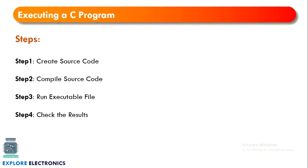So there should be some mechanism which converts this high level language — that is the source code. Source code is nothing but the code what we write, the program. There should be a mechanism which converts the source code into machine level code. This is known as compilation. What does a compiler do? It converts or compiles the source code into machine level code.